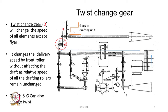Even though delivery speed changes, the draft is not going to change because the motion first goes to the front drafting roller, and from there it goes to the rest of the rollers. The relative speed of middle and back roller with respect to front roller is not going to change — all rollers change simultaneously by the same amount, so draft remains the same but delivery will be different. Theoretically, gears D, H, and G can all work as a twist wheel, but because gear D is visible from outside, it is generally used as the twist change gear.